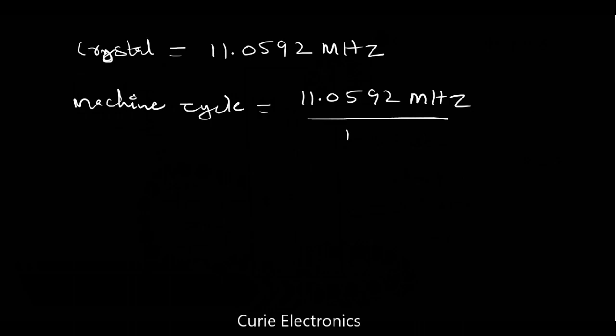Then we will get 921.6 kilohertz. If you take time period, 1 upon f, then you get 1.085 microseconds. So this 8051 with 11.0592 megahertz crystal will take 1.085 microseconds for one machine cycle.